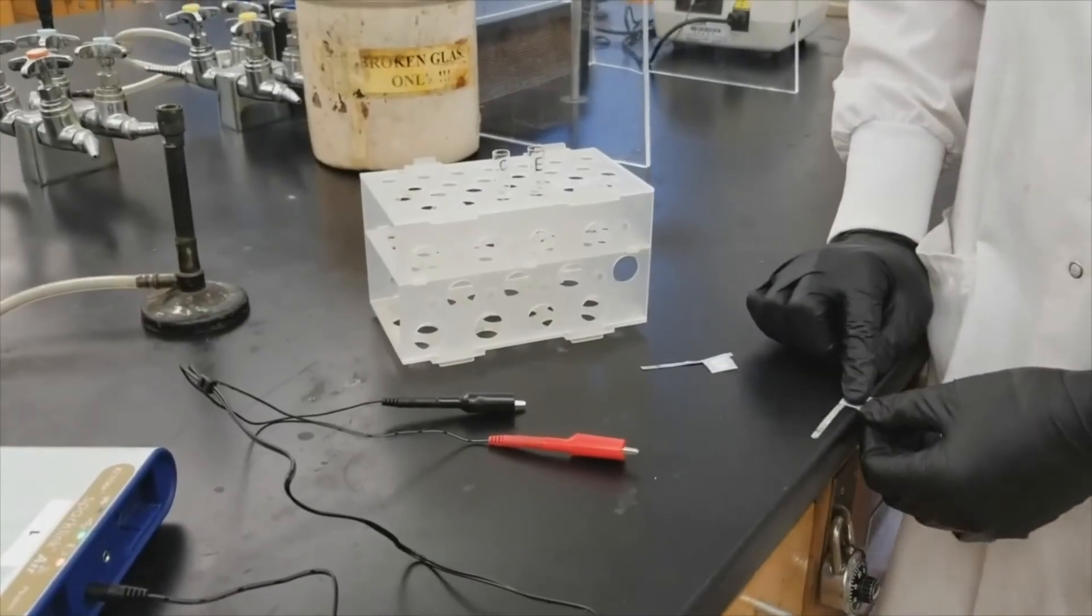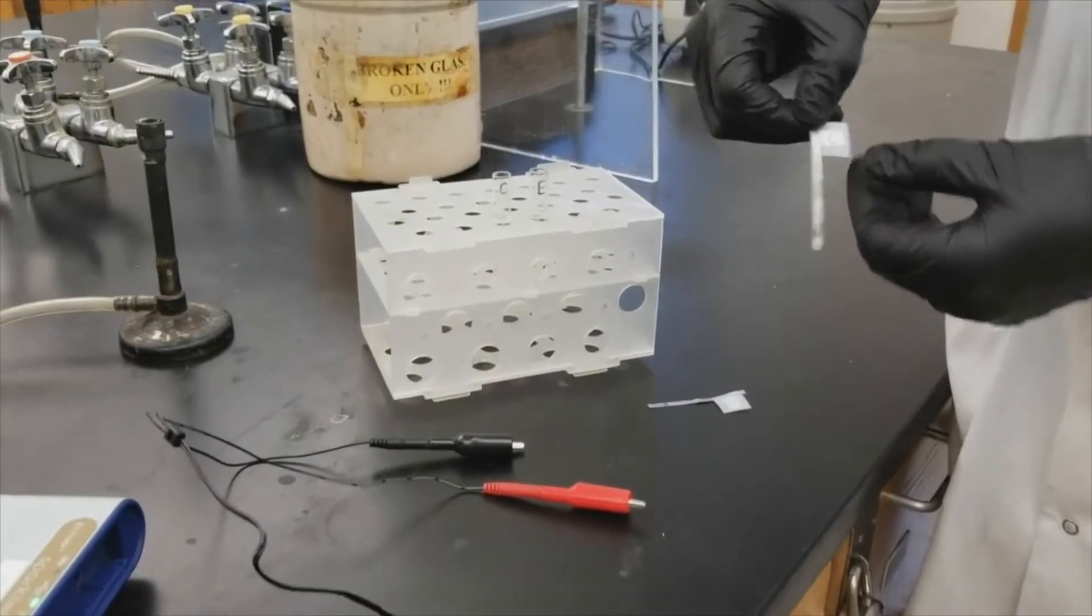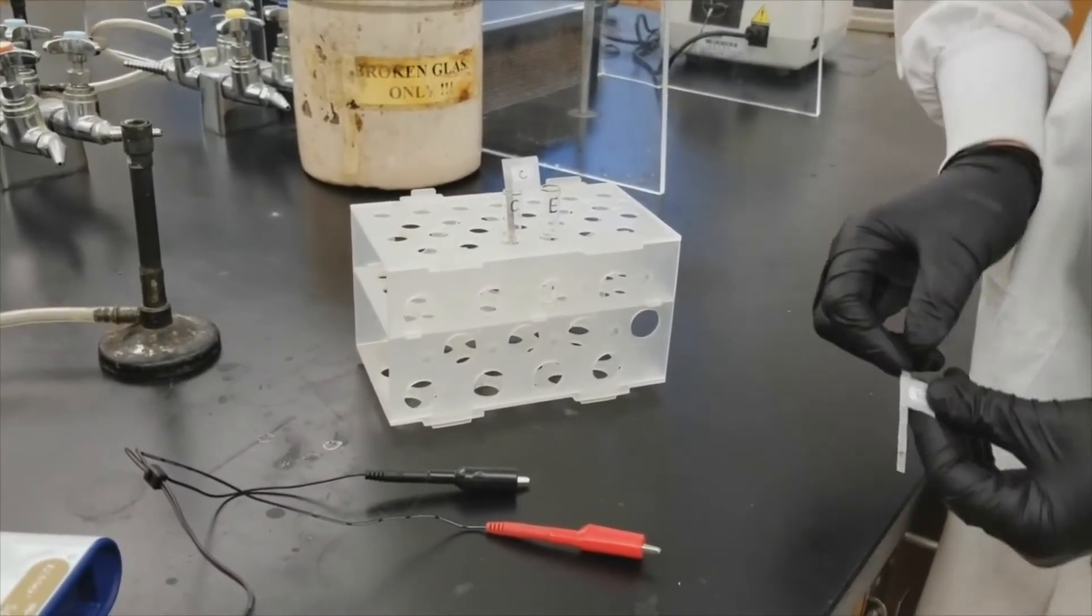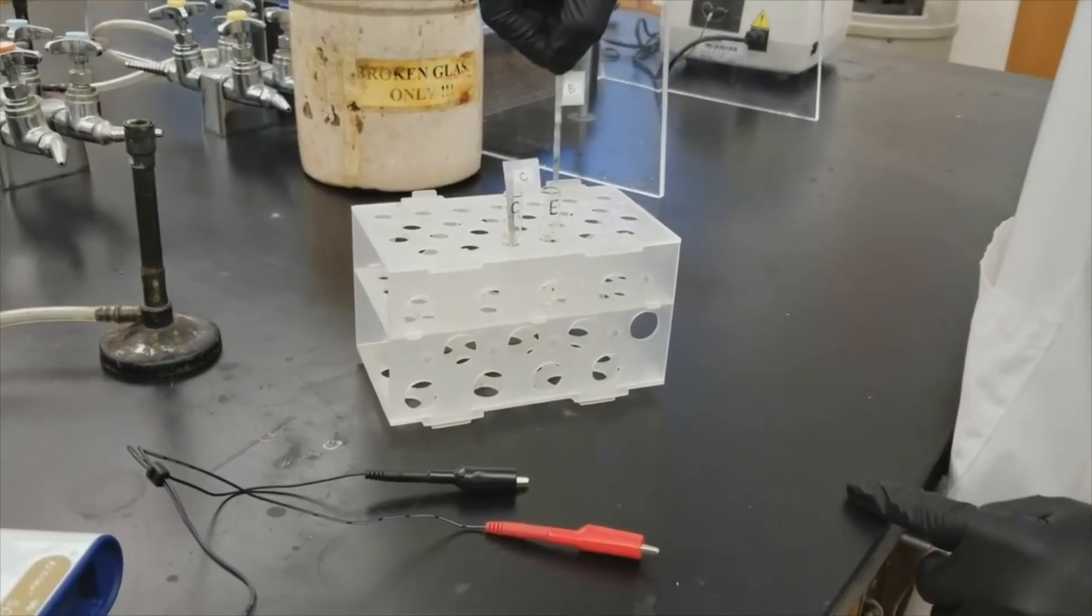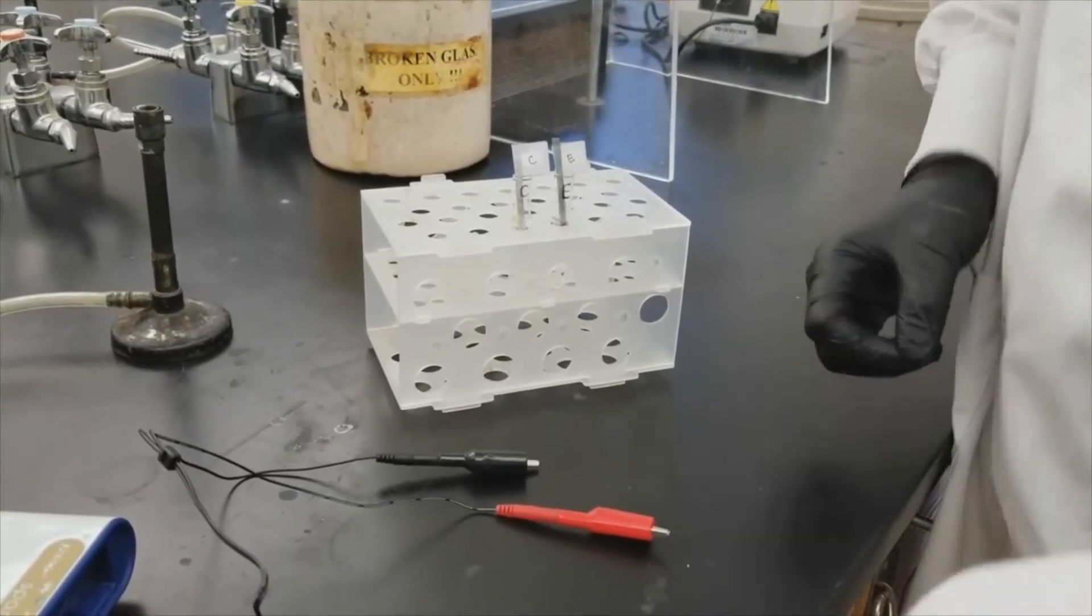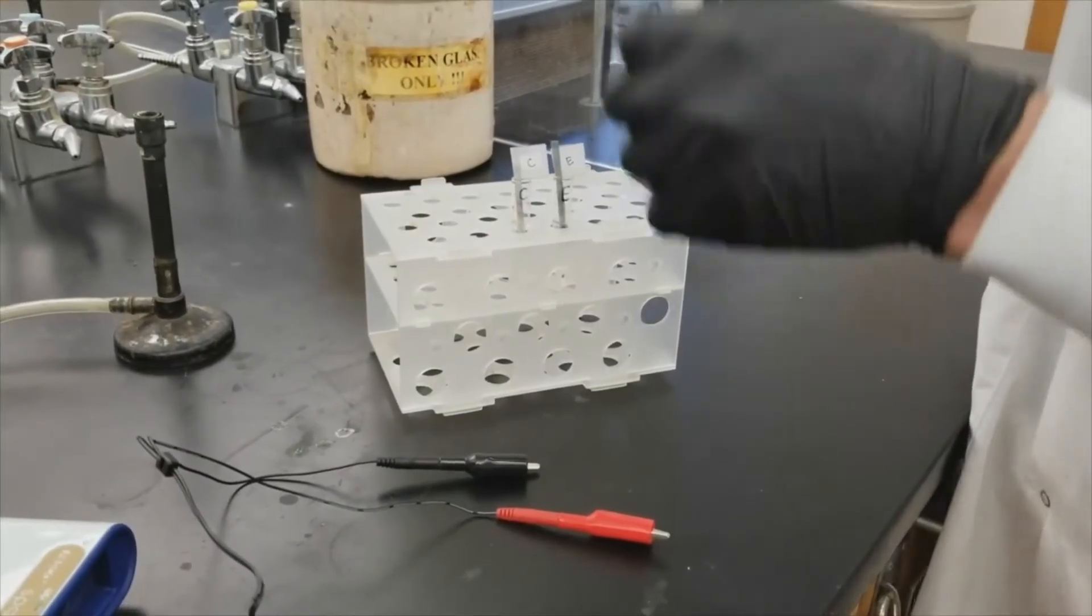Next, you'll need to gather test tubes of your five unknown metal ion solutions and place the corresponding metal electrodes into each solution. You only need to fill the test tube about halfway with the ion solutions, but make sure it's enough that your metal electrode is submerged.